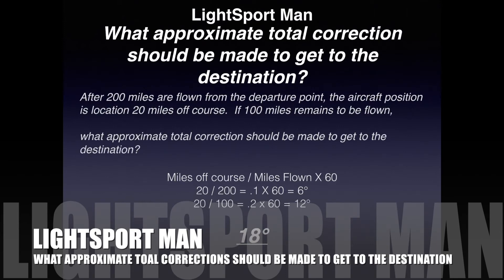What you're going to do here is take the 20, which is the 20 miles off course, and divide it by the miles flown, which is 200. That gives you 0.1. Then you multiply 0.1 by 60, which gives you 6 — that equals 6 degrees.